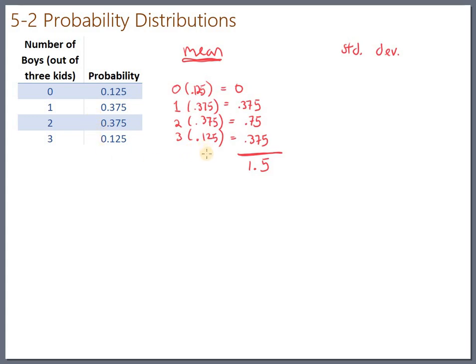And let's also look at getting the standard deviation. So if you average lots and lots of families with three kids, you get an average of 1.5 boys. How much spread is there around that though? So let's look at the standard deviation.